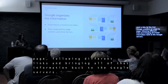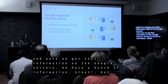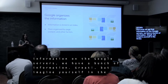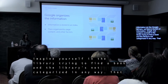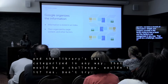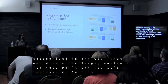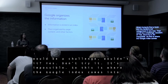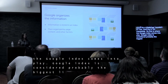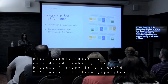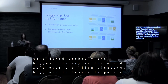Once all that information is on Google's servers, we have a huge amount of data. Imagine trying to find a book in a library that isn't categorized in any way — that would be a challenge. This is where the Google Index comes into play. The Google Index is considered probably the biggest library in the world — over one billion gigabytes — and it puts structure into all the information the crawlers have brought in.